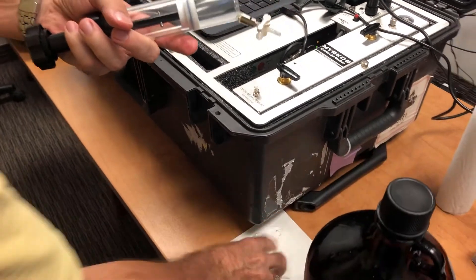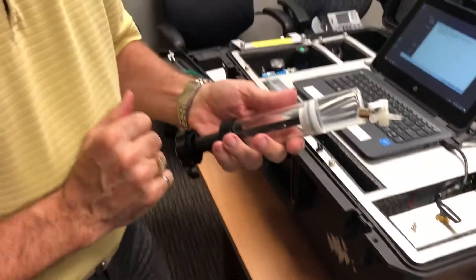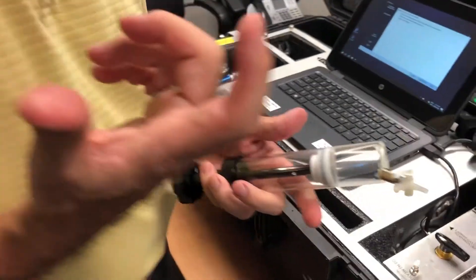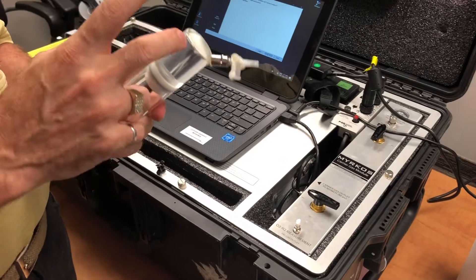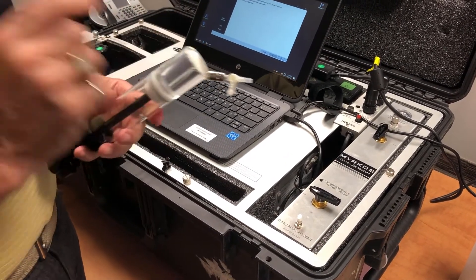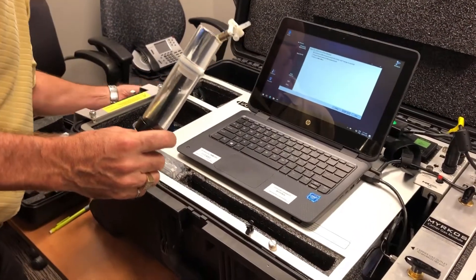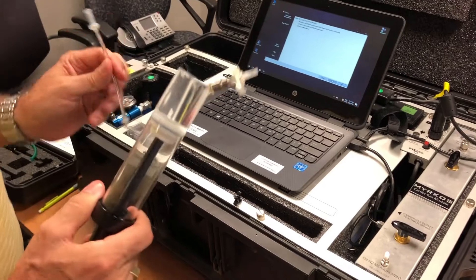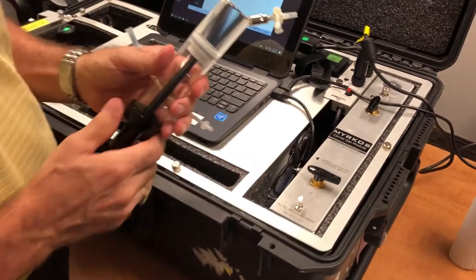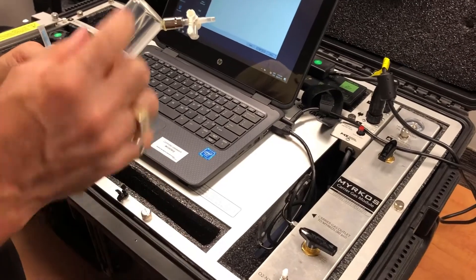And we need to create again a headspace. Now we cannot use air. If we use air, we're going to bring a lot of oxygen and nitrogen, and we will contaminate the result. So what we do is we use helium. We use helium into the helium cylinder to create a headspace.